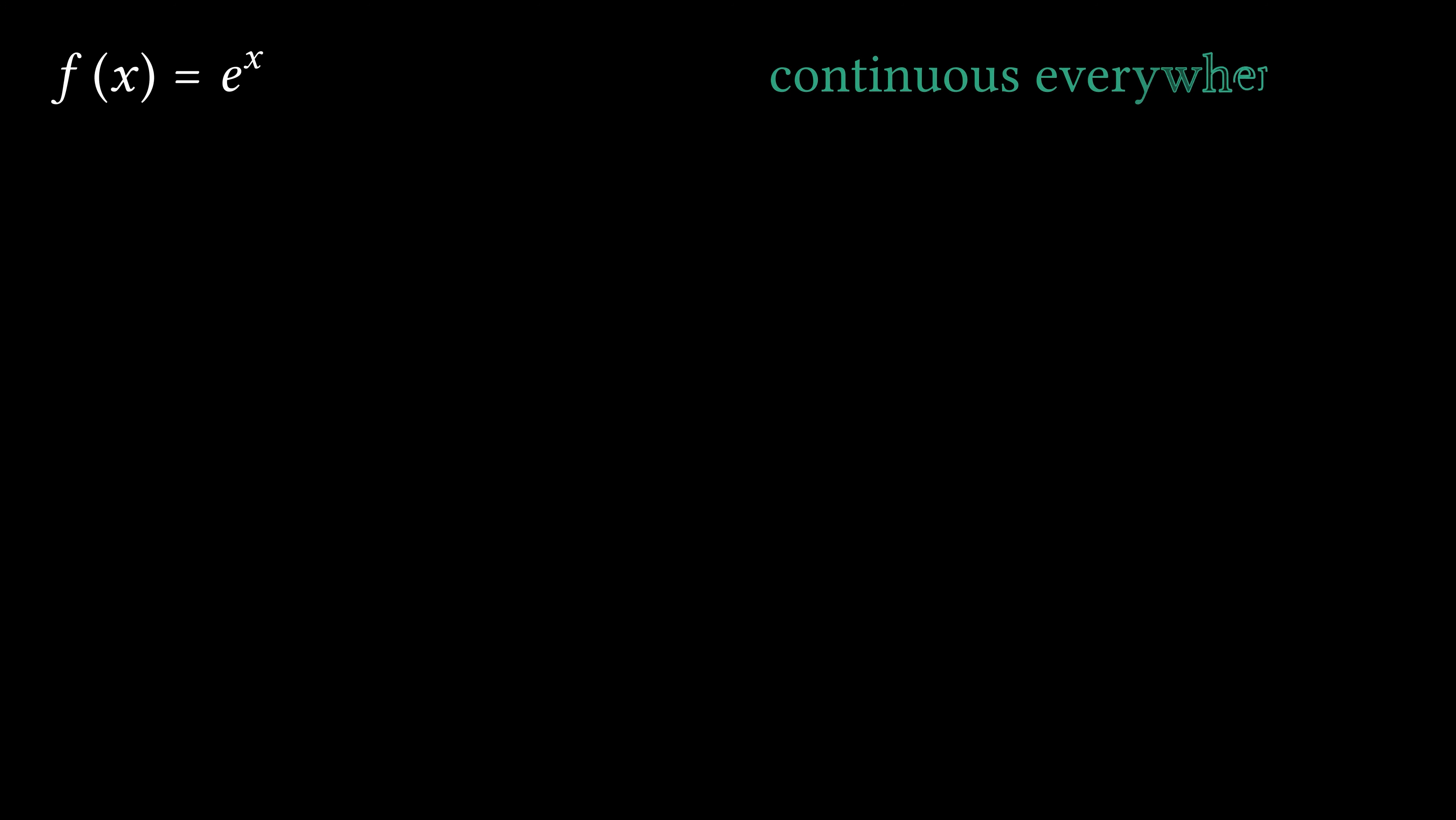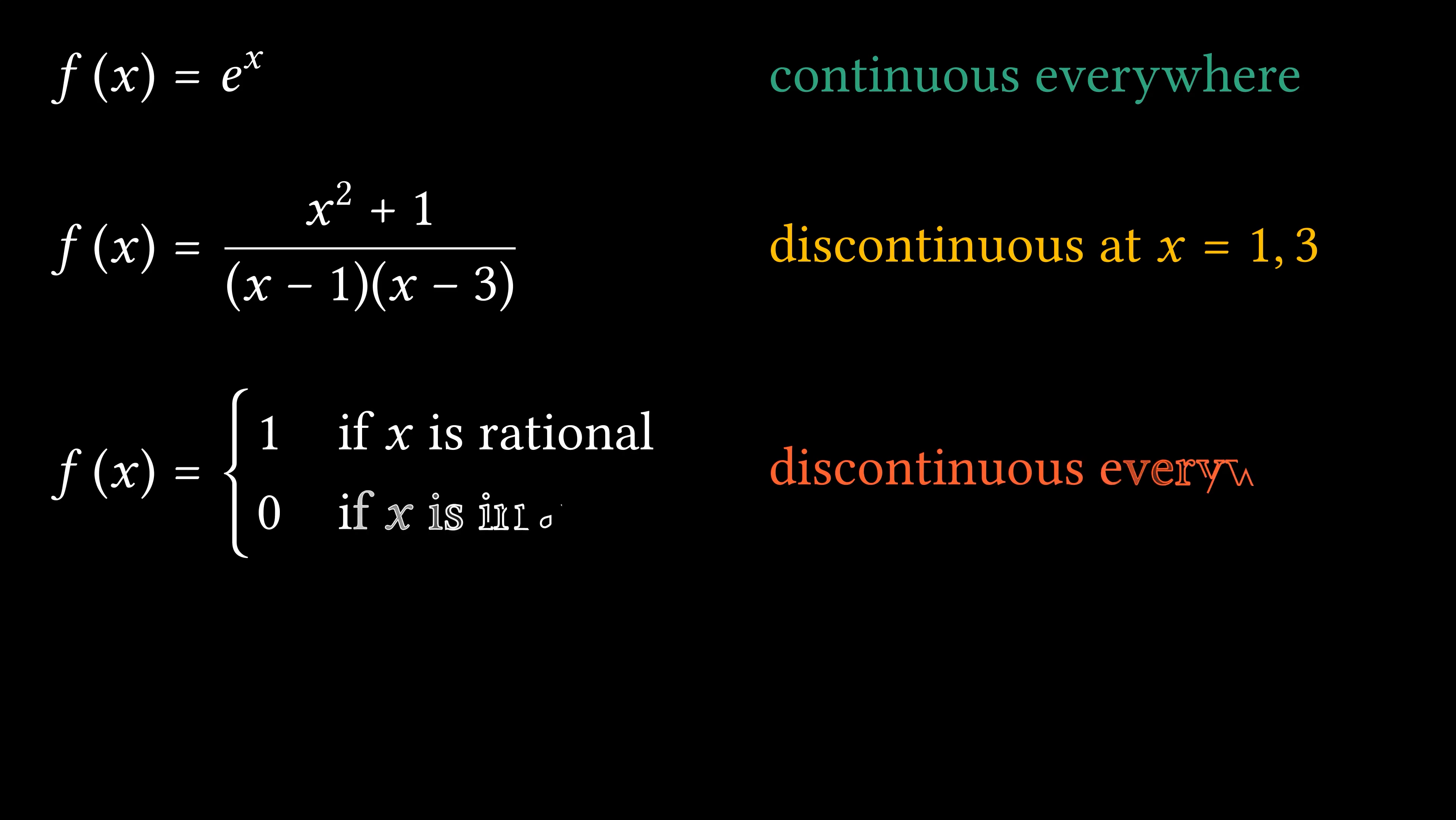In analysis, we usually encounter functions that are continuous everywhere. We also see functions that are discontinuous at several points, and we can construct functions that are discontinuous everywhere. But is there a function continuous at one point only?